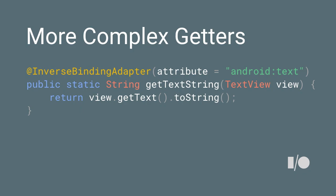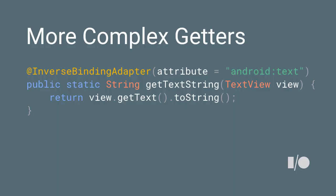We also notify our onChange listener, so now we know that when the TextView changes, it will call our generated onChange. For a more complex getter: the TextView doesn't return a String, it returns a CharSequence. Nobody uses CharSequences directly — if you try to assign a CharSequence to a String, typecast error. So we have a getTextString method which will automatically convert your CharSequence into a String.